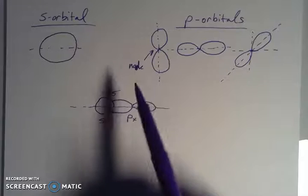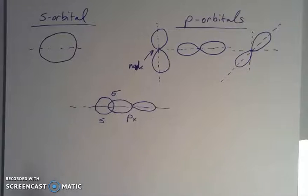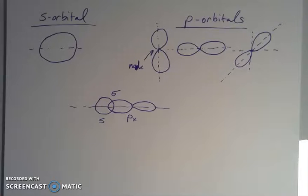It's really all about how well a region in space overlaps with another and how likely you are to find electrons there. A strong overlap gives a strong covalent bond. If you have any questions, don't hesitate to reach out.